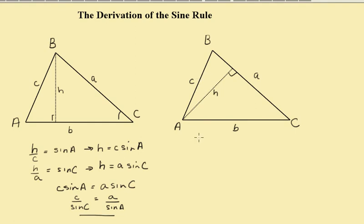We can see that H over C equals the sine of B, which implies that H equals C sine B.